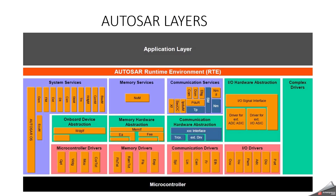AUTOSAR is basically a layered architecture. It has three layers: one is the application layer, second one is the AUTOSAR runtime environment, and third one is the basic software. Basic software can be further divided into three more layers: service layer, ECU abstraction layer, and microcontroller abstraction layer. In this video, we are going to discuss about types of software components, what is a software component, and how it will be visible in an AUTOSAR ARXML file.